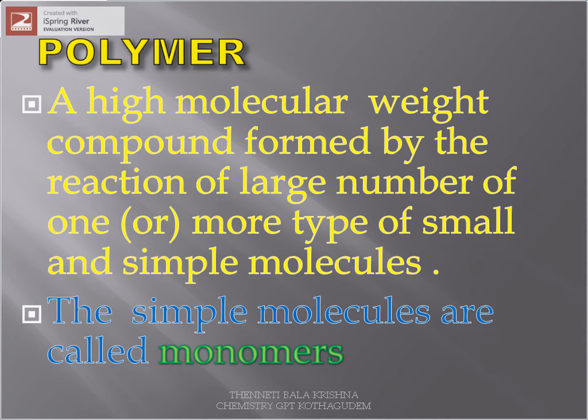The simple molecules are called monomers. Mer means a smallest unit — a simple unit or small molecule is called a mer. Mono means single, so monomer means a single unit. The single units are combined to form a large molecule, and that large molecule is a polymer. The single unit molecule is called a monomer. Mono means one, mer means unit.